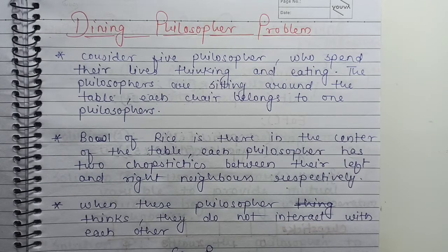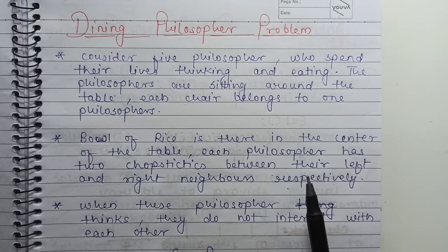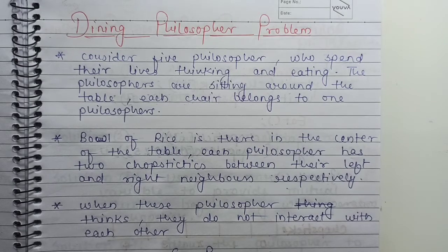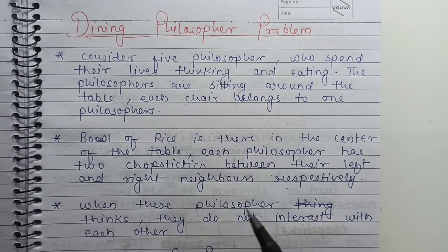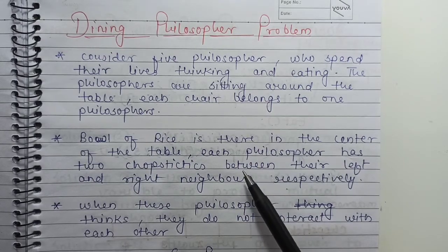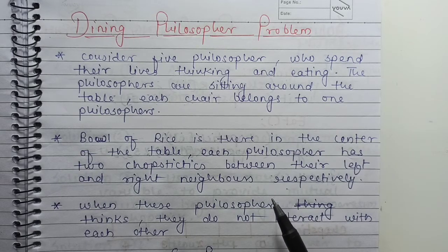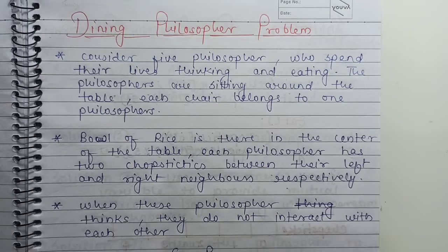We have already discussed two problems: the producer-consumer problem in bounded buffer and the reader-writer problem in the last video. In this video, we are going to discuss the dining philosopher problem. So what does this problem state? Let's consider there are five philosophers who spend their lives thinking and eating.